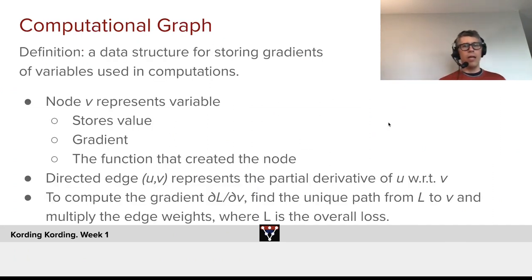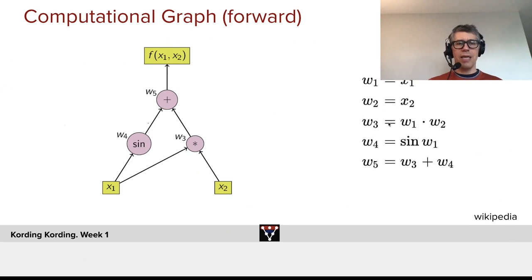How does it work? A lot of these approaches are based on the computational graph. What's a computation graph? It's a data structure for storing gradients of variables used in computations. We have each node stores the value during the computation. As you'll see in a slide or two, we can always describe a computation as a tree. Each node will store the value, it's used to calculate the gradient, and it's also used to store the function that created the node. And a directed edge existing from U to V represents the partial derivative of U with respect to V. And to compute the gradient, we'll find the unique path from L to V and multiply the edge weights, where L is the overall loss. Let's look at exactly how such a thing works.